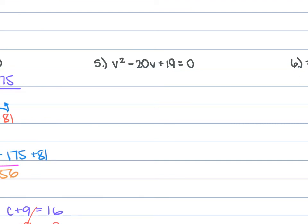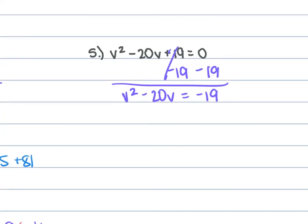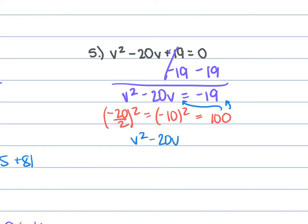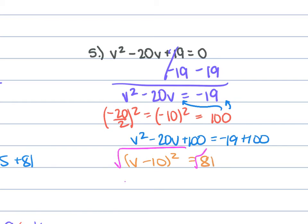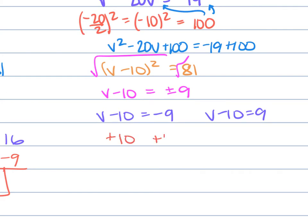For problem 5, we have v squared minus 20v plus 19 equals 0. Subtract 19 from each side: v squared minus 20v equals negative 19. b is negative 20, so negative 20 over 2 squared is negative 10 squared, which is 100. Add 100 to both sides: v squared minus 20v plus 100 equals negative 19 plus 100. Factor to get v minus 10 squared equals 81. Take the square root: v minus 10 equals plus or minus 9. Form two equations: v minus 10 equals negative 9 gives v equals 1; v minus 10 equals positive 9 gives v equals 19.